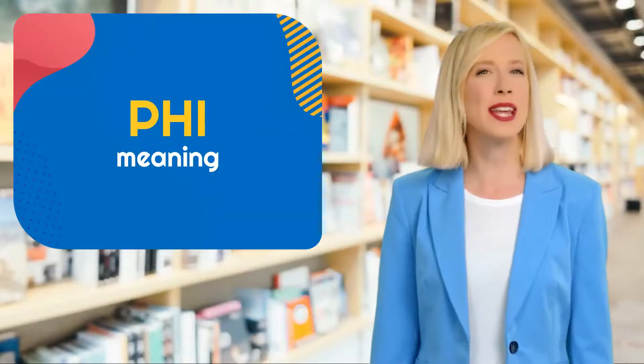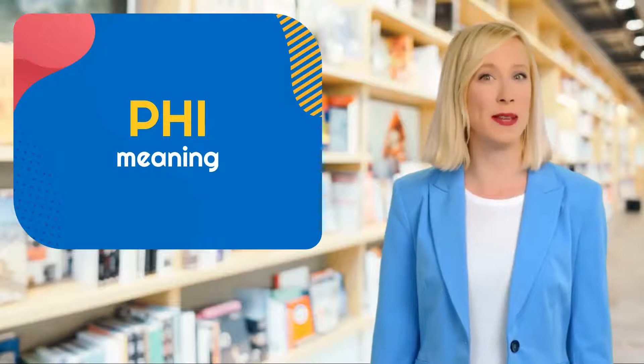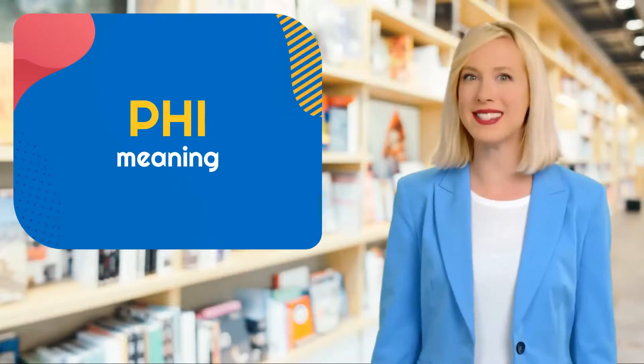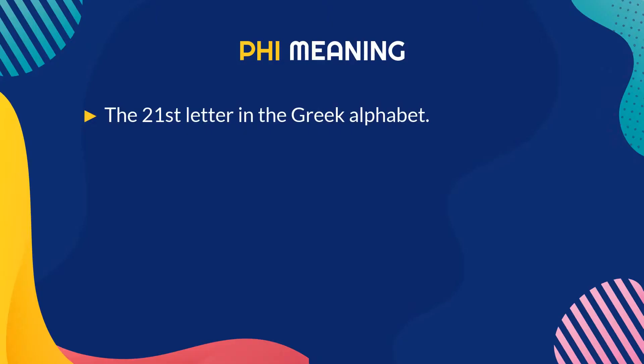Hey there! It looks like you're about to learn something new. Do you know what this means? Phi meaning: the 21st letter in the Greek alphabet.